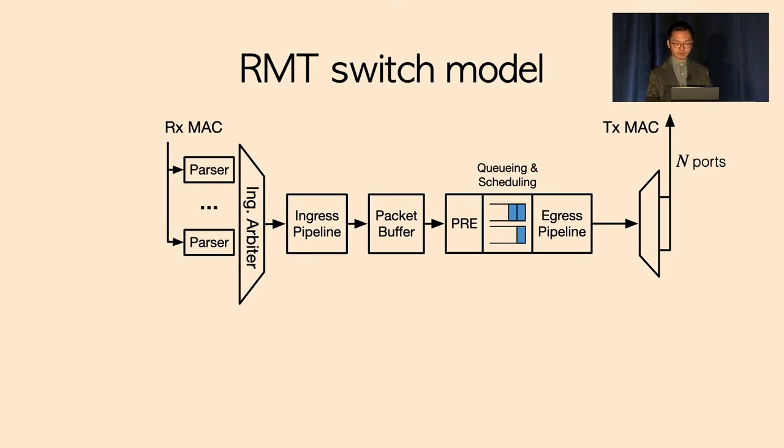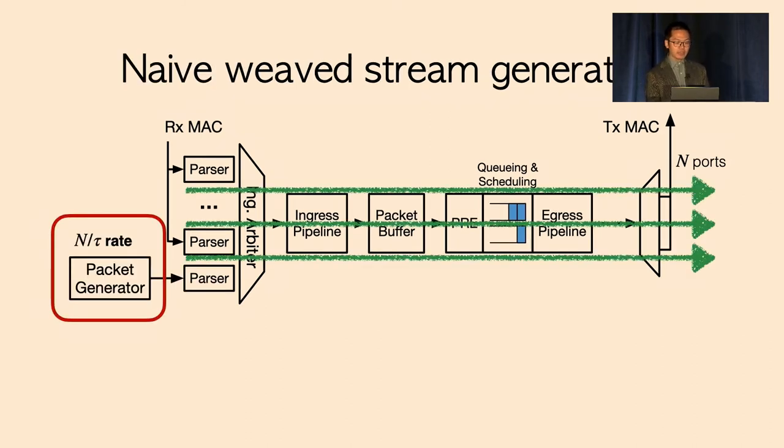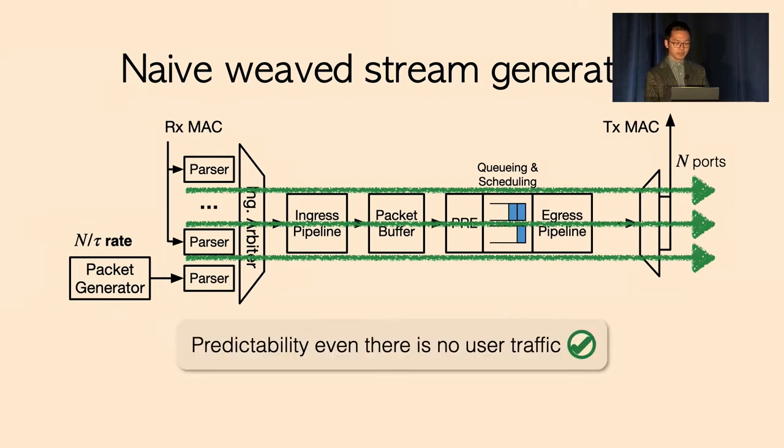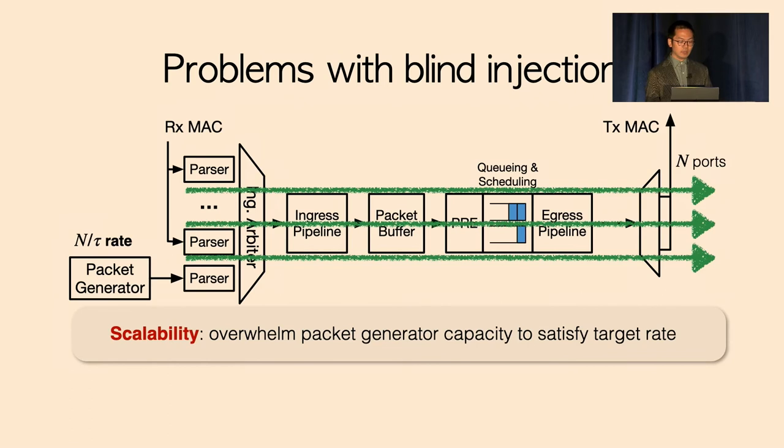So now how to generate a weave string? It turns out that there is actually a built-in data plane packet generator in today's programmable switches that is integrated into the architecture of the pipeline. Using it, the first naive idea is just to leverage this to generate a string of idle packets for all egress ports. This seems to work as even when there are no user packets, the inter-packet gap will be no greater than the configured threshold. While the predictability requirement is satisfied, unfortunately the naive strategy will overwhelm the packet generator if the switch ports are fully utilized.